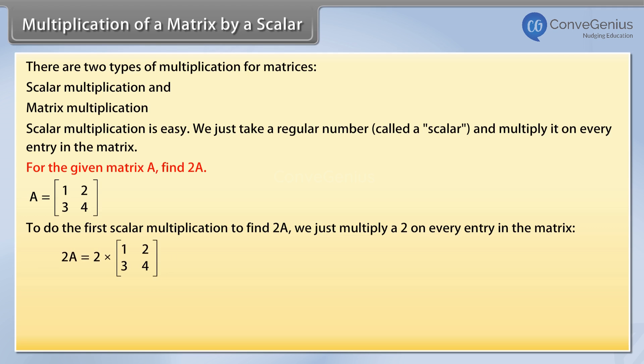2A equals 2 times the matrix, row-wise: first row 1, 2; second row 3, 4, which equals the matrix, row-wise: